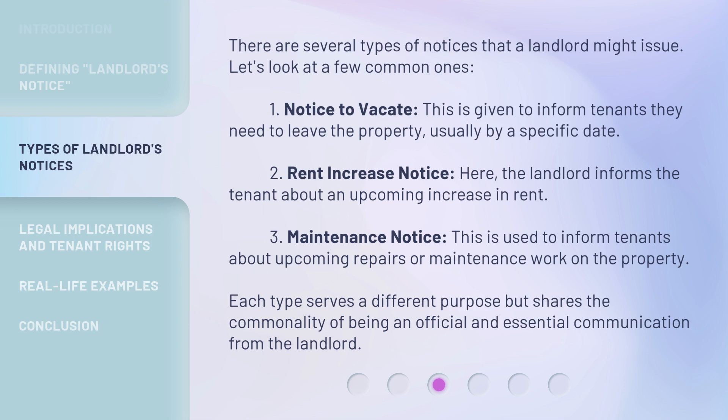There are several types of notices that a landlord might issue. Let's look at a few common ones. 1. Notice to Vacate — this is given to inform tenants they need to leave the property, usually by a specific date. 2. Rent Increase Notice — the landlord informs the tenant about an upcoming increase in rent. 3. Maintenance Notice — this is used to inform tenants about upcoming repairs or maintenance work on the property. Each type serves a different purpose but shares the commonality of being an official and essential communication from the landlord.